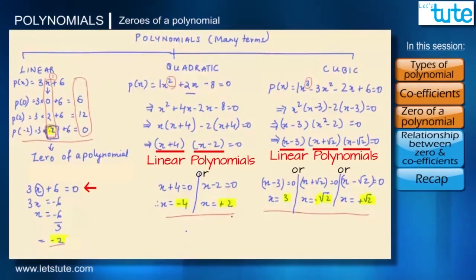So suppose instead of minus 4 and 2, the zeros of this quadratic polynomial were minus 4 and minus 4. We're just assuming. In that case, if both the zeros are of same value, they are considered only as one zero. So we could have lesser than two zeros for a quadratic polynomial but not more than two zeros.